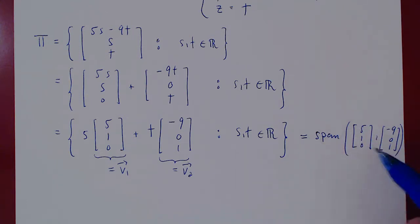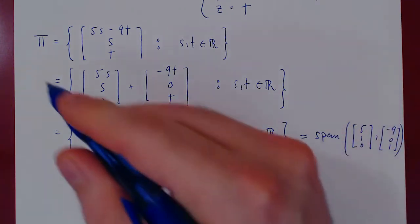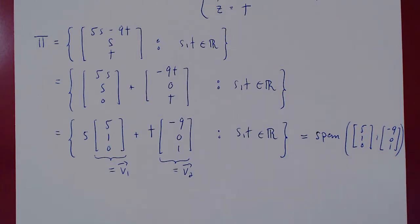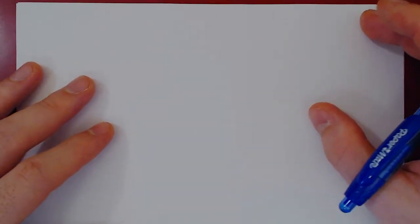The span of these two vectors is the entire plane. These two vectors alone are enough to generate every point on the plane. Instead of thinking of the plane as an infinite set of points, we think of it as the object we can build from just these two vectors.